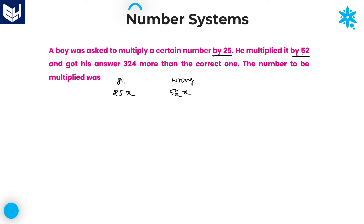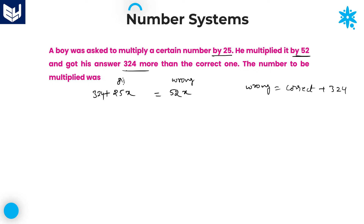He multiplied that number by 52 and got an answer 324 more than the correct one. The wrong answer is 324 more than the correct answer. So the equation is: wrong answer = correct answer + 324. Wrong answer is 52x and correct answer is 25x.